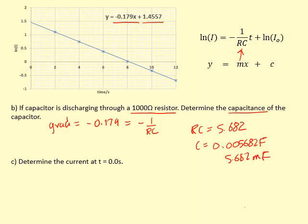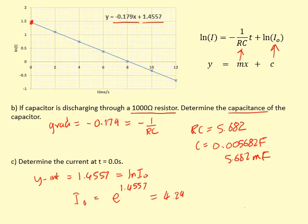To find the current at t = 0, I need to use the y-intercept. The y-intercept is equal to 1.4557, which is also equal to ln(I₀). You can see from here. So to work out I₀, I need to do e^1.4557, which gives me 4.29 amps.